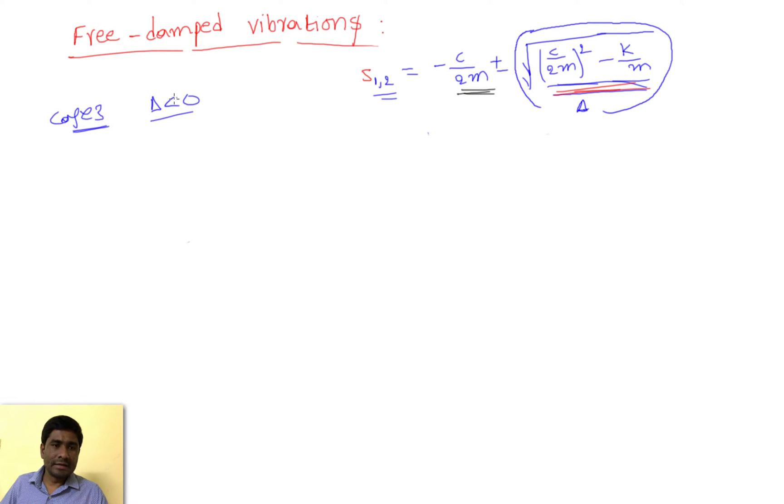In the third case, delta is less than zero. Whenever delta is less than zero, this entire term is less than zero, which gives complex roots.